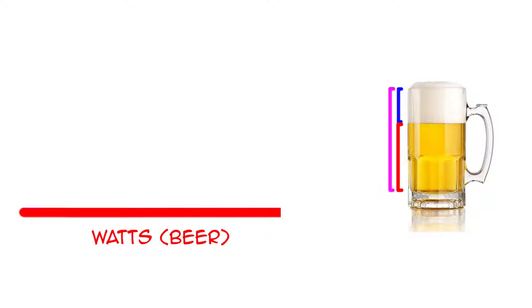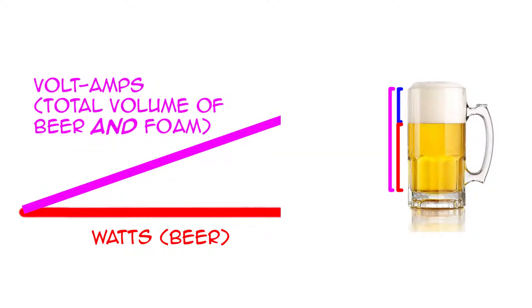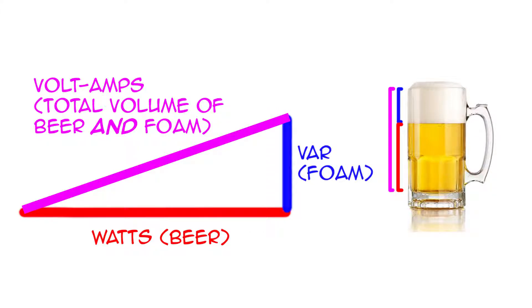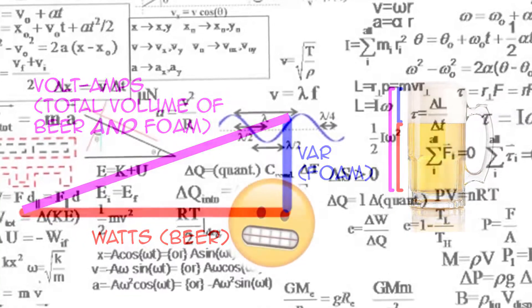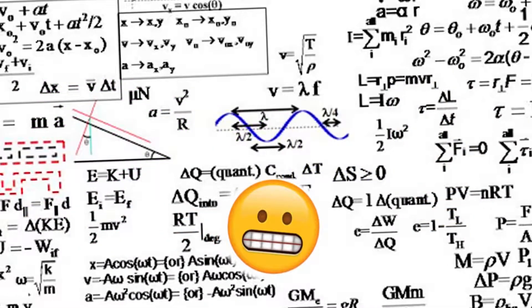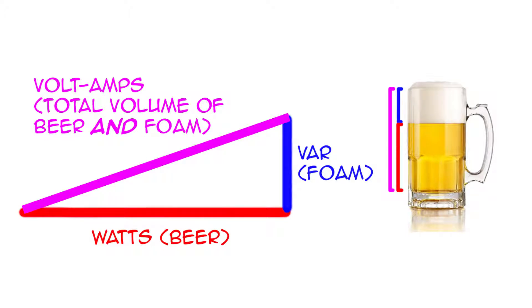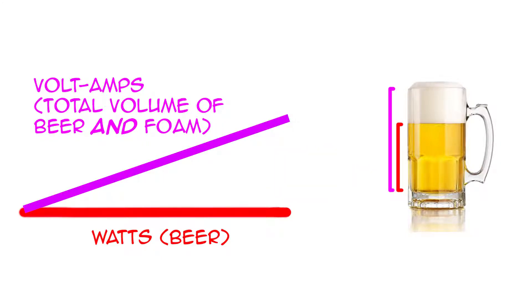Volt amps, on the other hand, are like the total volume taken up by both the liquid beer and foam. In electrical terms, our foam is called volt amps reactive, and is a result of the less than 100% efficient way that electronics and LED drivers convert power. But at the end of the day, watts and volt amps are the more relevant figures.